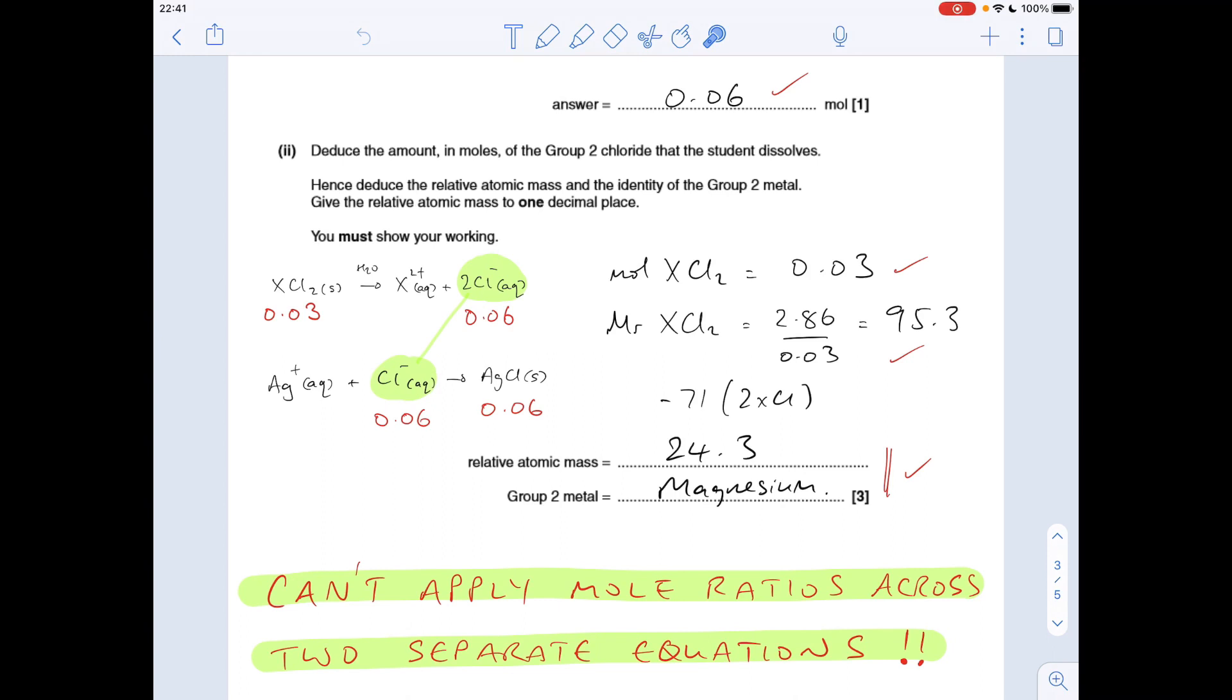The important thing to note here is that the mole ratio, I've got it written here, you can't apply a mole ratio across two separate equations. The classic mistake of a student would quite correctly calculate the moles of that, establish the one-to-one ratio and go 0.06 moles of that, but then what they do is they double going into that equation. Well that mole ratio in that equation has got nothing to do with this equation. They are the same thing.